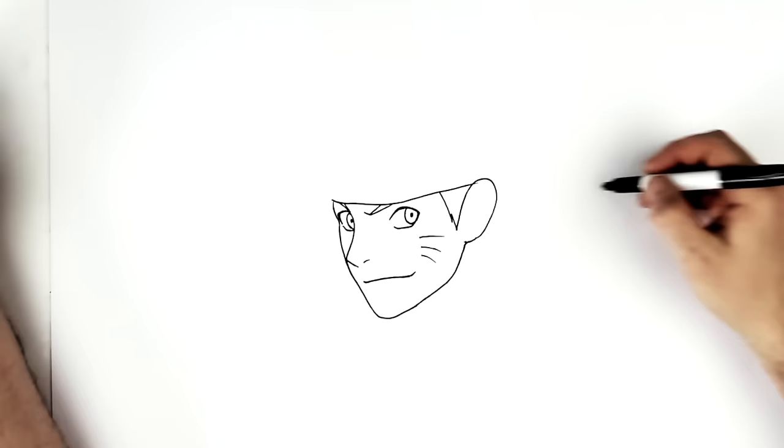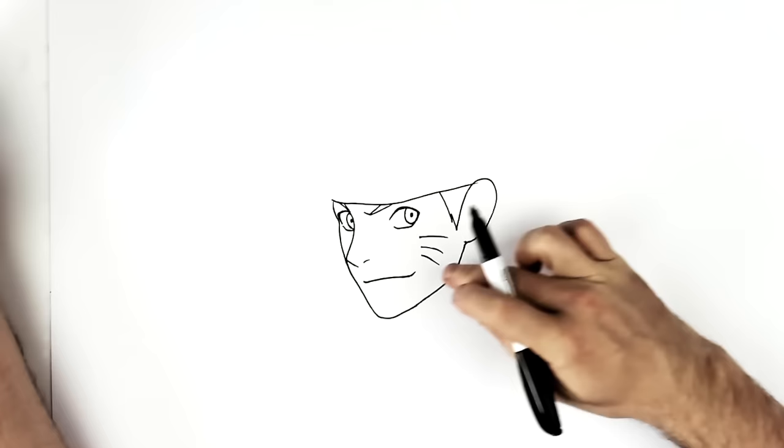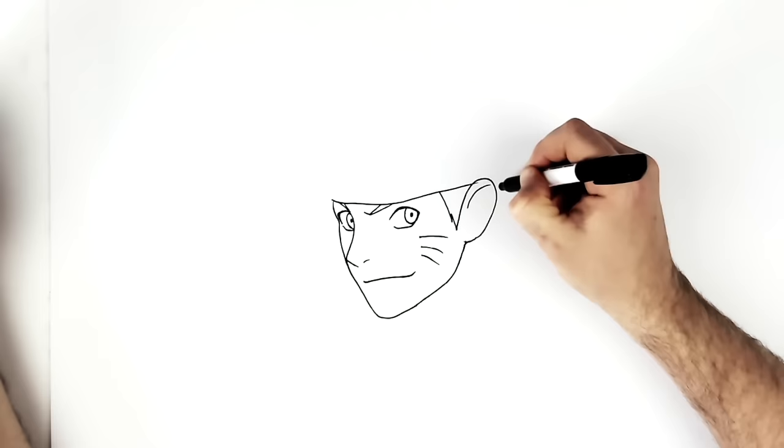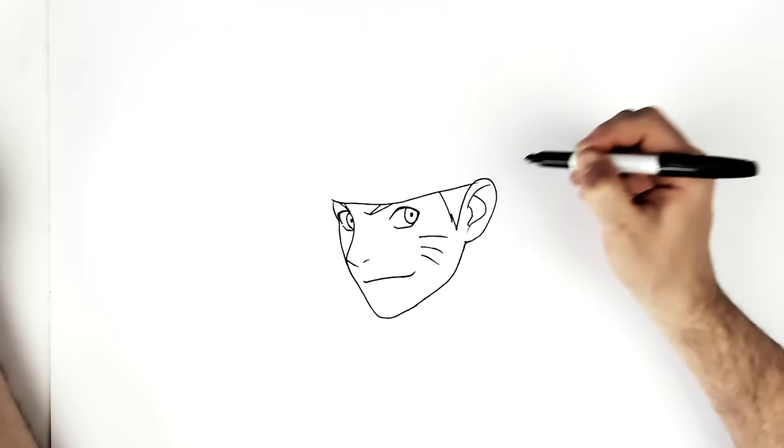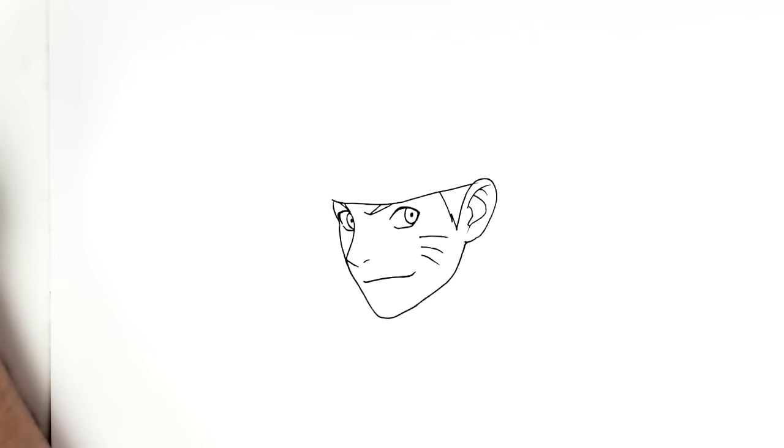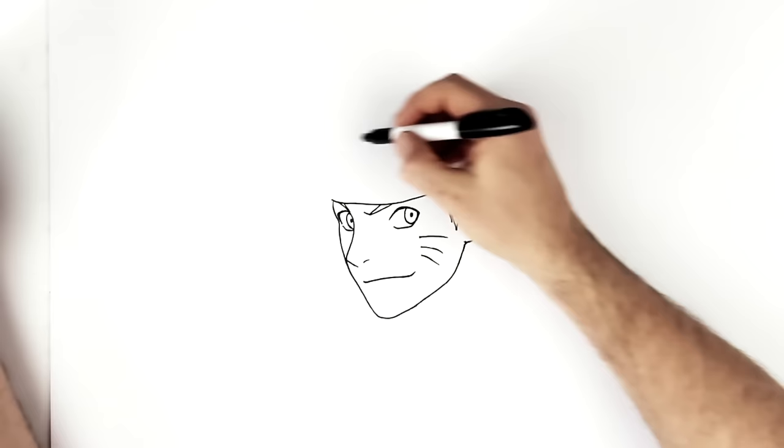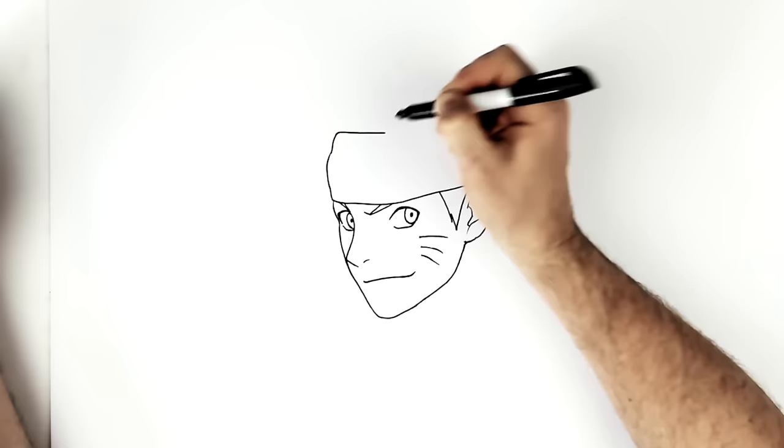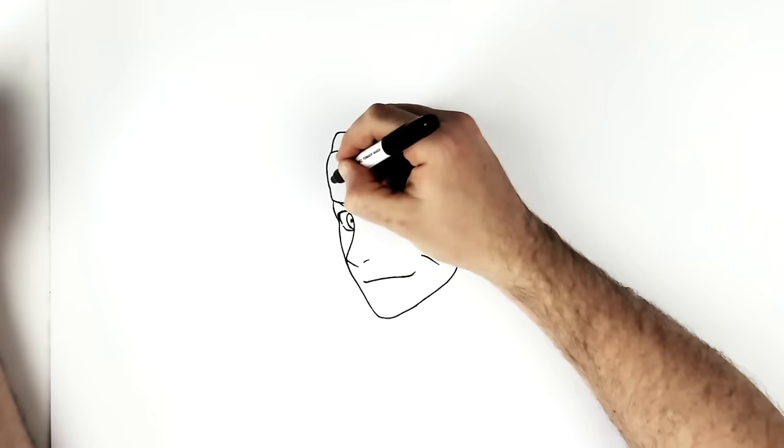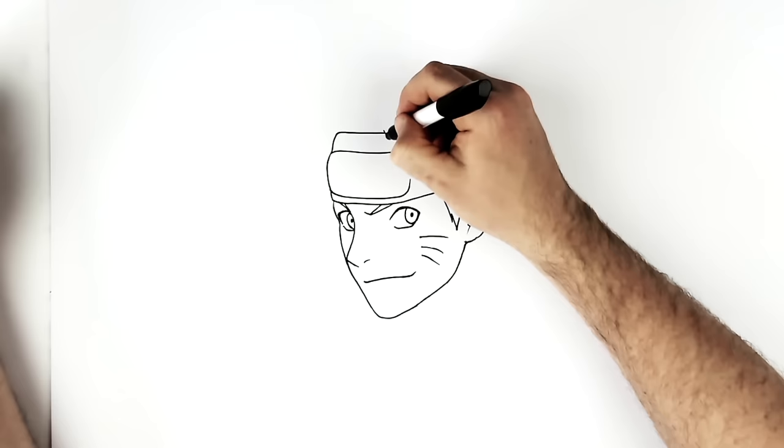And then ear lines inside. So the easiest way to start these ear lines is just like a letter J sort of thing like that. And if you want, you can add a bit more detail like so. So front of the headband kind of bumps this way. We got the metal plate in the middle. So the metal plate can be just in here, curves around. And then we have a hair spike that cuts off the corner.